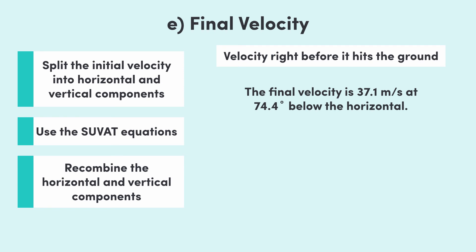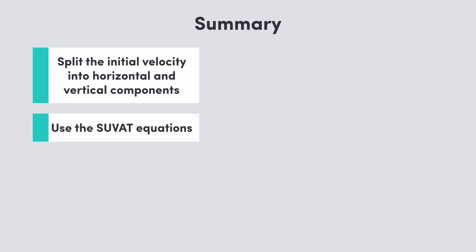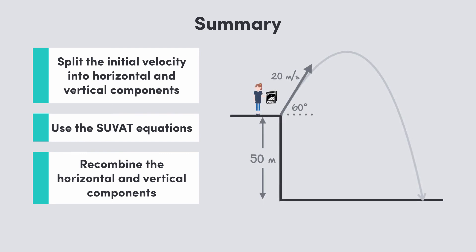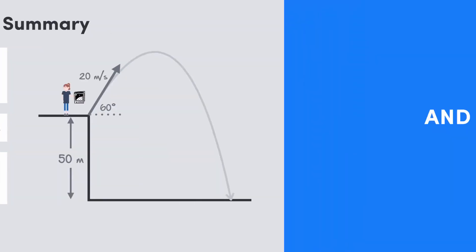And we're done. In this video, we went through an example projectile motion problem. We followed three key steps: decomposing the initial velocity, using the SUVAT equations, and recomposing the velocities at the end. These, as well as the diagram from the first part of the question, are up on screen for you now. Thanks for watching and I'll see you next time.